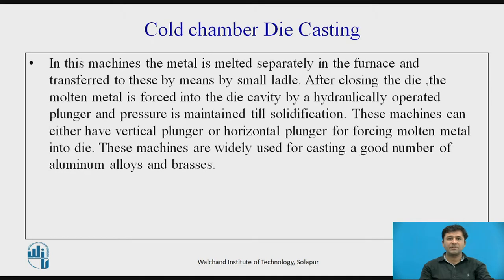Cold chamber die casting is the first type we will study. In these machines, the metal is melted separately in a furnace and transferred by means of a small ladle. The metal is melted elsewhere and brought near the mold. After closing the die, the molten metal is forced into the die cavity by a hydraulically operated plunger, and pressure is maintained until solidification.